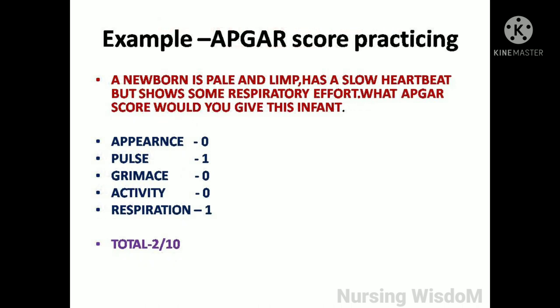Second example: a newborn is pale and limp, has a slow heartbeat, but shows some respiratory effort. Appearance is pale — score is 0. Pulse is slow — score is 1. Grimace is 0 because the baby is limp with no cry. Activity — baby is limp — score is 0. Respiration shows some effort — score is 1. Total score is 2 out of 10, indicating a severely depressed infant who needs immediate resuscitation and support.